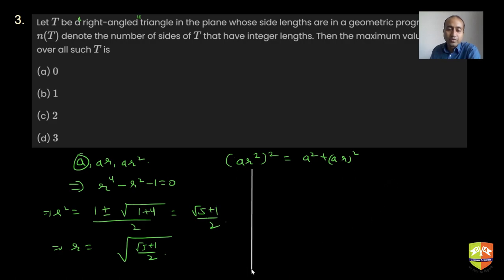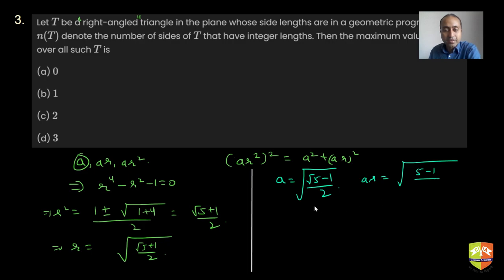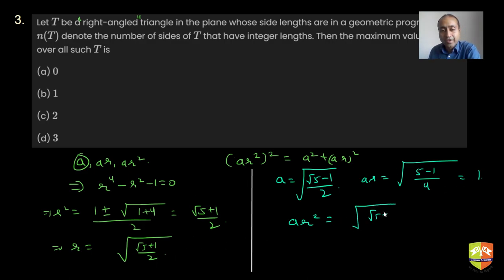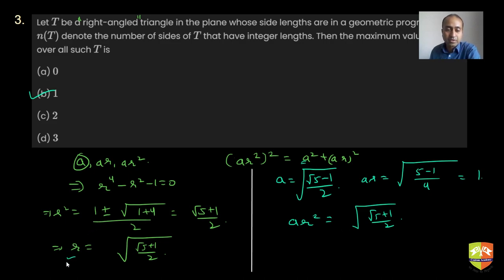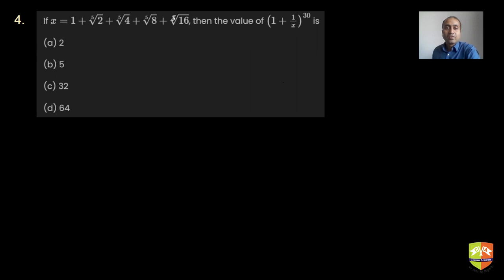Since r is irrational and so is r², at most one of the three sides (a, ar, ar²) can be an integer. Even if we try a = √((√5-1)/2), then ar = 1 is an integer, but ar² remains irrational. So the maximum number of integer-length sides in this right triangle is 1, which is option P. This part required some careful reasoning after finding r, making it a moderately tricky question.